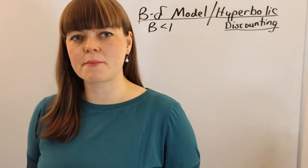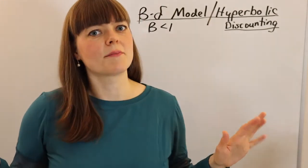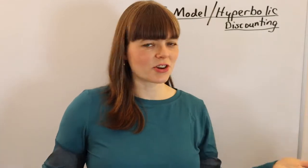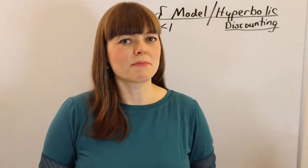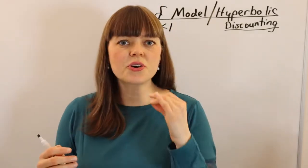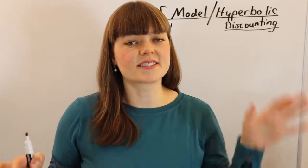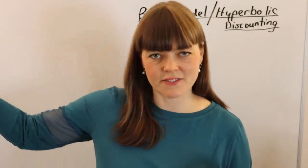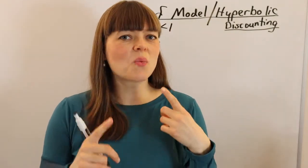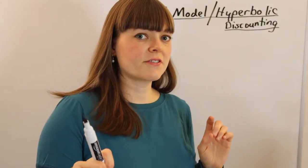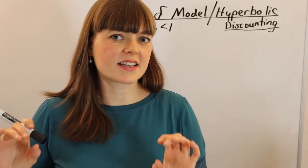Now I'm going to go over a numerical example of the hyperbolic discounting model versus the classic discounting utility model and show you how the hyperbolic discounting model can capture procrastination. This is an example I learned in grad school from Matt Rabin, who was teaching the graduate behavioral economics course at the time. The example is: you could spend 120 minutes today learning Excel tricks, and if you learn those Excel tricks today, it's going to save you 10 minutes a day every period starting tomorrow and into the future. You're going to choose between three options: learn the Excel tricks today, learn them tomorrow, or never learn them.